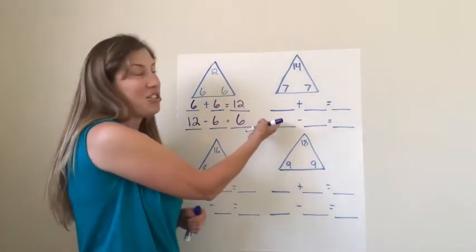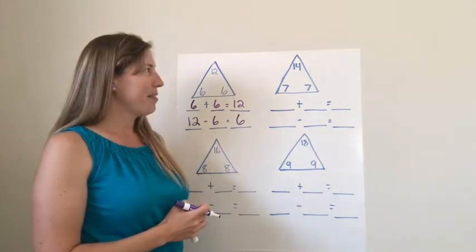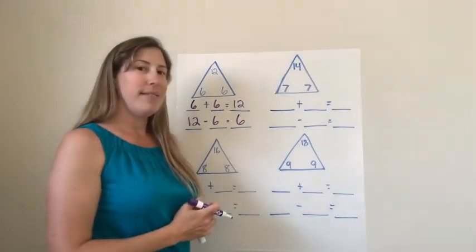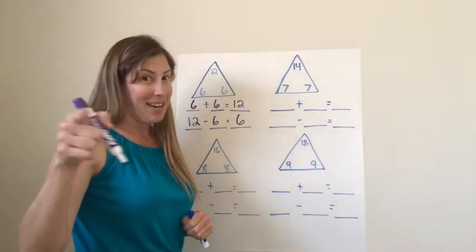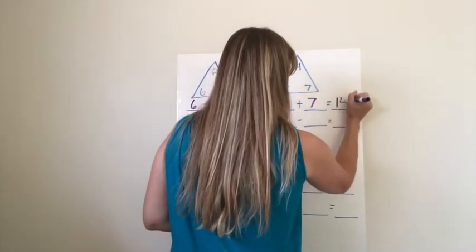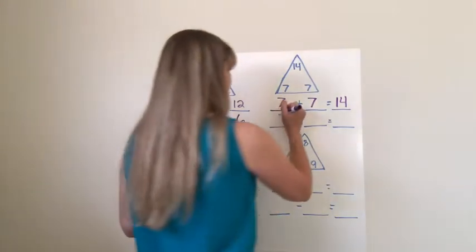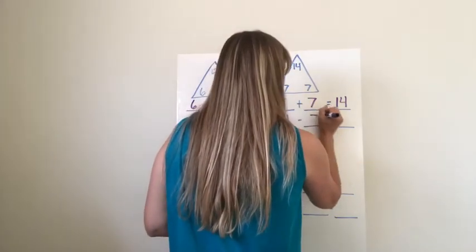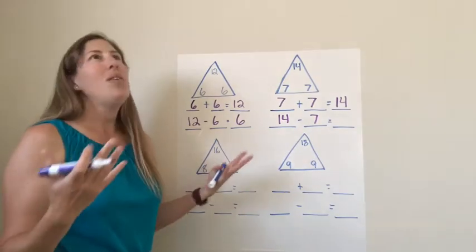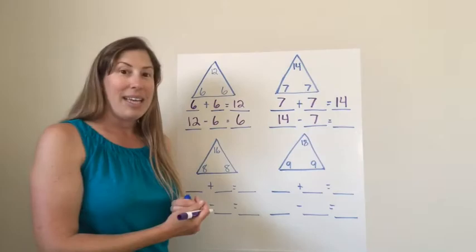So what would be the addition sentence for this next one? There's a fourteen, a seven, and a seven. The doubles math fact that I know is seven plus seven. And I know it's fourteen. So now if I saw the problem, fourteen take away seven, on my paper, I would know, oh yeah, those are all related. Fourteen minus seven is seven.